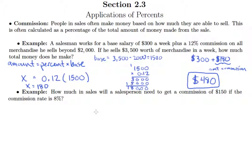So we're looking again for the base. The person got a commission of $150. So this is our amount of commission. And of course, this is the percent. So we'll set this up as 150 equals 0.08 times X, which is the base. So we'll divide both sides by 0.08.